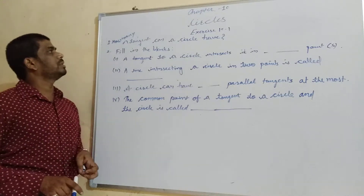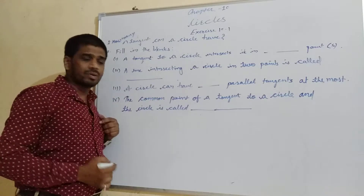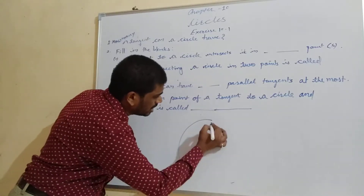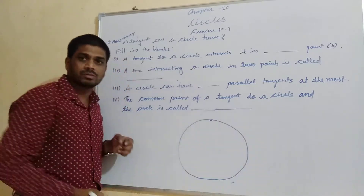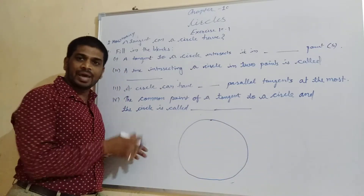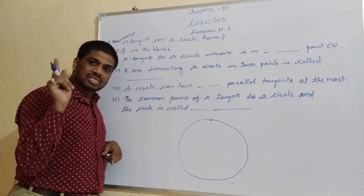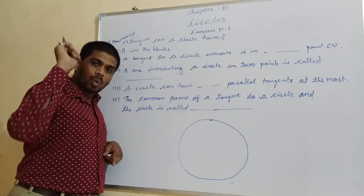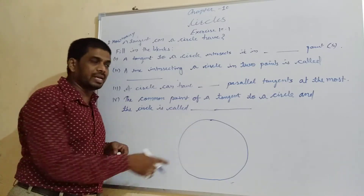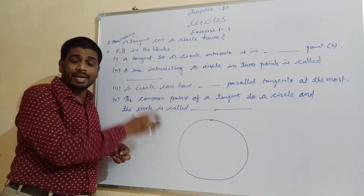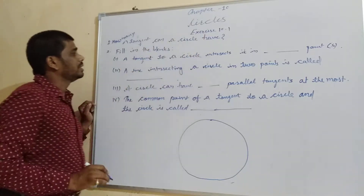Let's see Exercise 10.1, the very first question: how many tangents can a circle have? If there is one circle, we know that on each circle there are infinite points, which means we can draw infinite tangents, because at every point of a circle we can draw only one tangent. So there are infinite points, meaning infinite tangents we can draw on a circle.